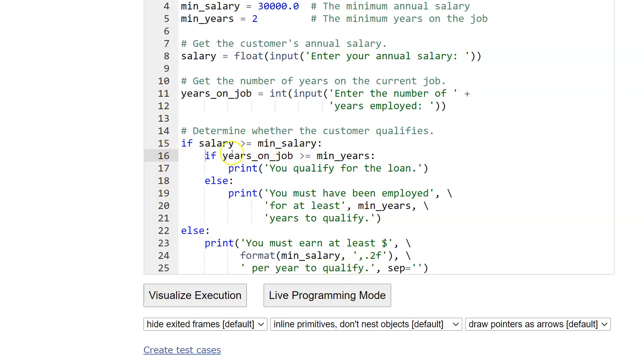If this is true, it will ask, okay, well, how many years on the job did you have? You've already answered that question, so it's going to test that. So we have years on the job. If it's greater than that, you print, you qualify for the loan. If not, we say else right here, you must have been employed for at least two years to qualify.